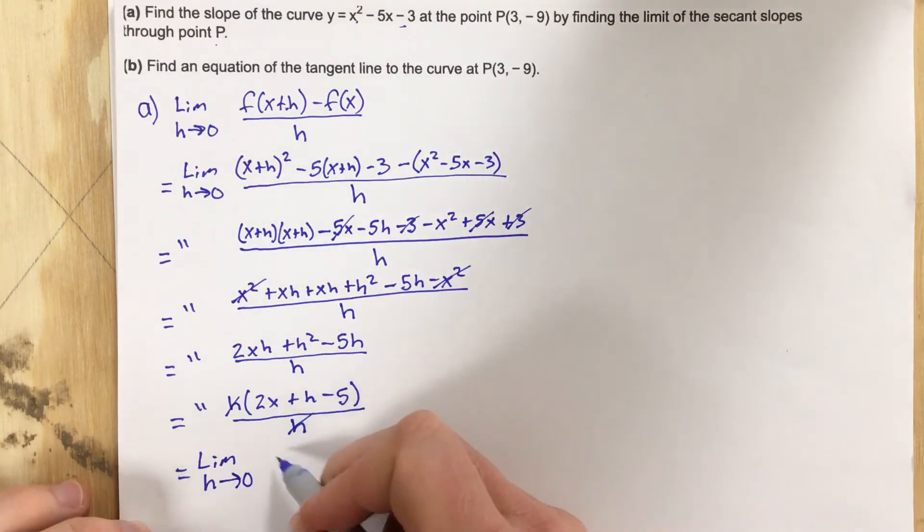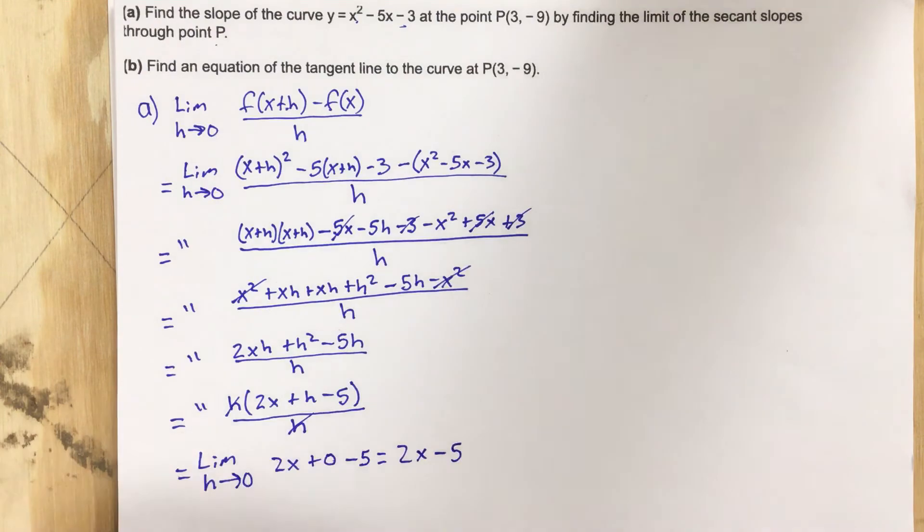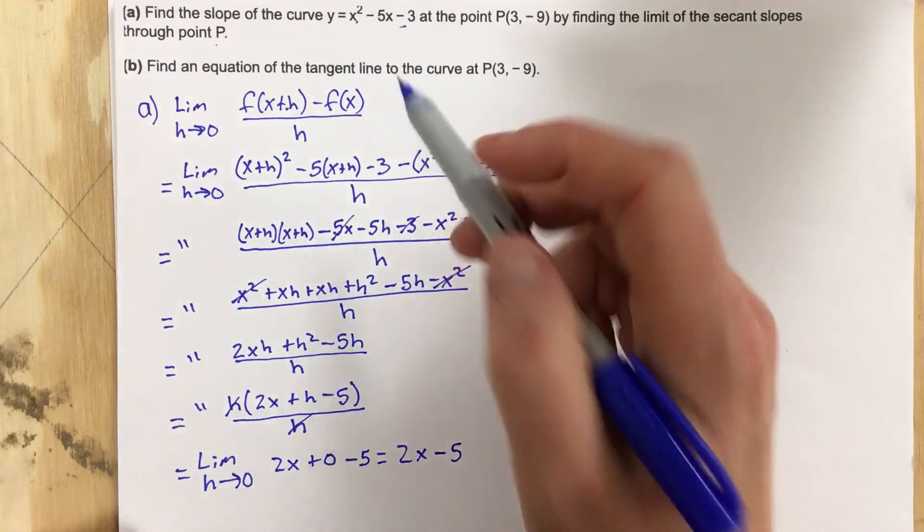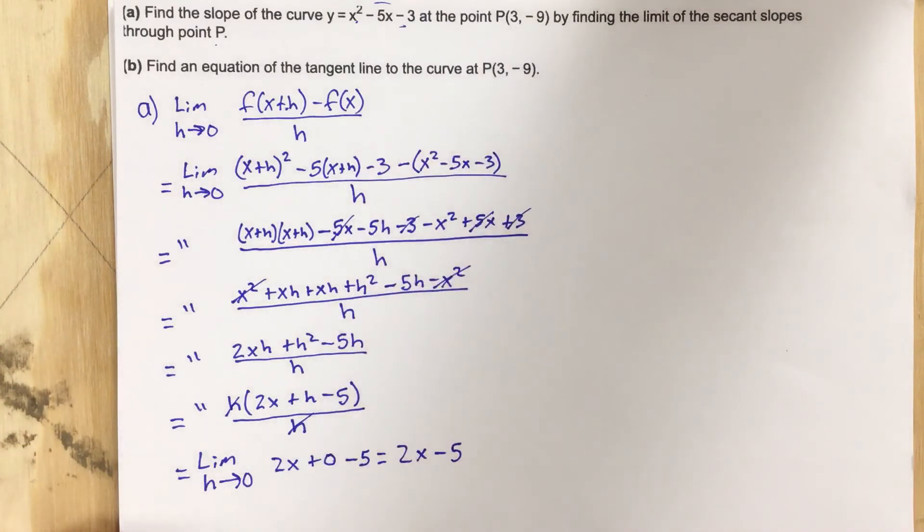...of 2x, and then I can say plus 0 minus 5 is equal to 2x minus 5. So this is the expression for the slope at any point on this curve x squared minus 5x minus 3.